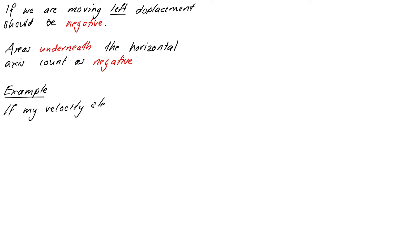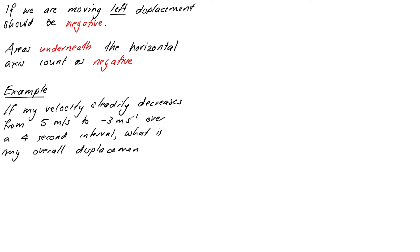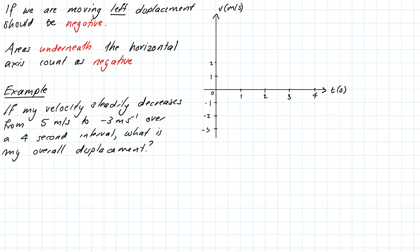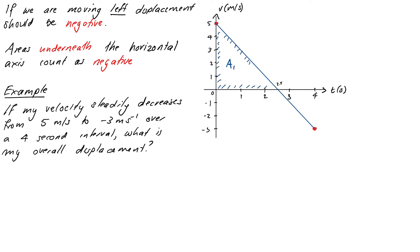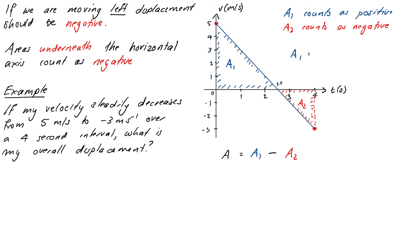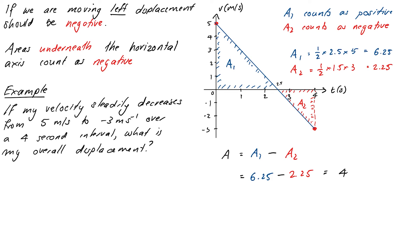Let's take an example where velocity steadily decreases from 5 to negative 3 meters per second over 4 seconds. We draw the graph — a straight line from 5 to negative 3 that crosses the time axis at 2.5 seconds. We calculate the areas of the two triangles separately: the first triangle has area 0.5 times 2.5 times 5 equals 6.25, and the second triangle has area 0.5 times 1.5 times 3 equals 2.25. Our overall displacement is 6.25 minus 2.25 equals 4 meters, because the second area is below the axis and counts as negative.